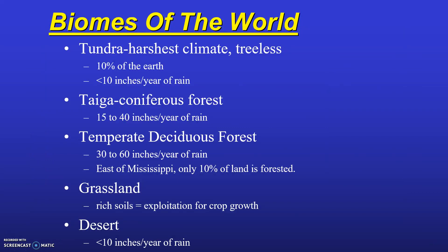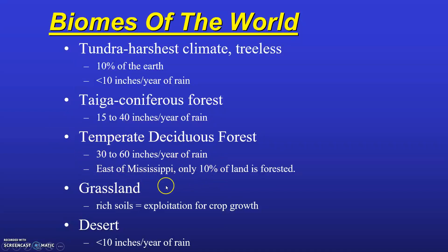This slide lists the different biomes of the world and provides typical rainfall amounts. The temperate deciduous forest receives between 30 to 60 inches of rain per year, typical of the area east of the Mississippi — Pennsylvania receives on average about 42 inches per year. The tundra receives less than 10 inches of rain per year, and only about 10% of the Earth is considered tundra.